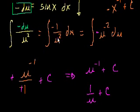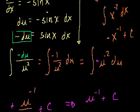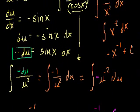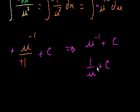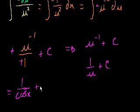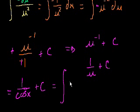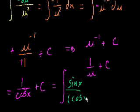We're not done yet — we need to back-substitute. Our substitution was u equals cosine of x, so 1 over u plus c becomes 1 over cosine of x plus c. That is the antiderivative of our original problem: the integral of sine of x over cosine squared of x dx. There you go — see you in the next video.